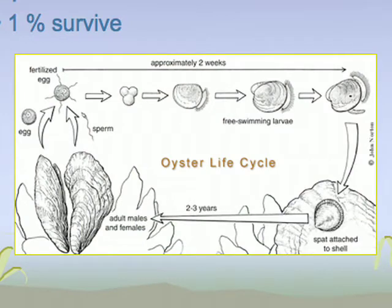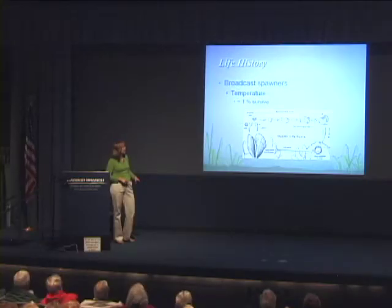They swim around and eat particles out of the water column. Then they develop a foot and look for a place to settle — another oyster, preferably, or some other substrate. Then they become adults, which can vary depending on species and location. At colder temperatures like in Canada, you might not reach adult size for four or five years. Here in Florida, it may be under two years.